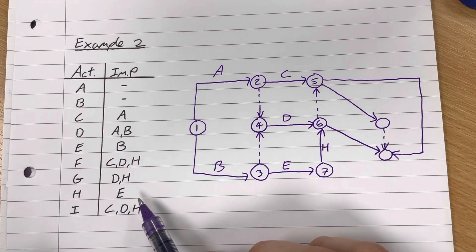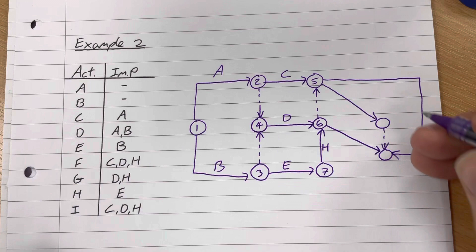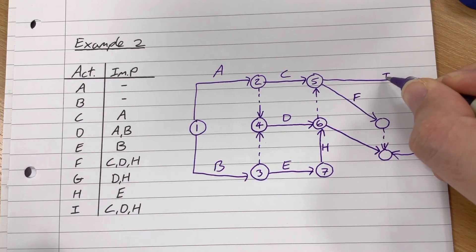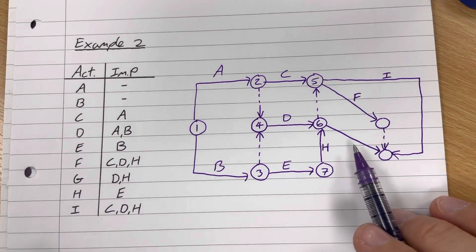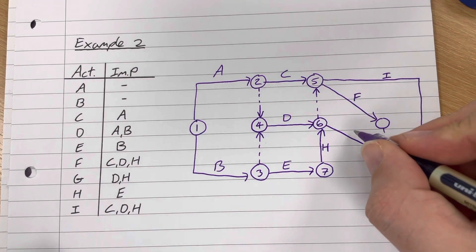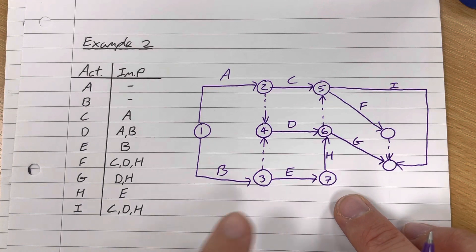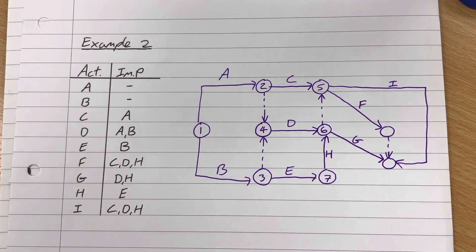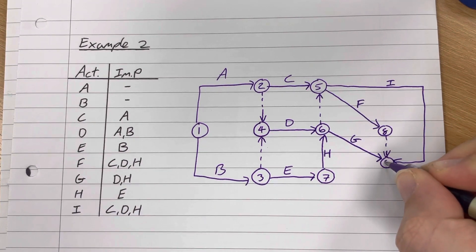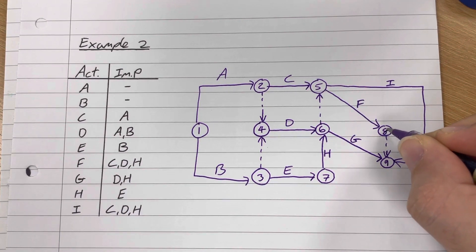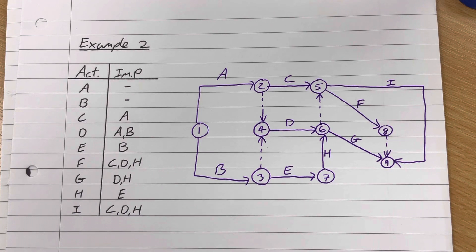F, I, and G don't appear anywhere on the predecessor list, so they all go into the end node. This network now perfectly represents the table, but it did take a little bit of thinking. If you need extra iterations and scribblings out, that's not a problem - just make sure your final answer doesn't have any scribbles on it, and simply redraw the network.